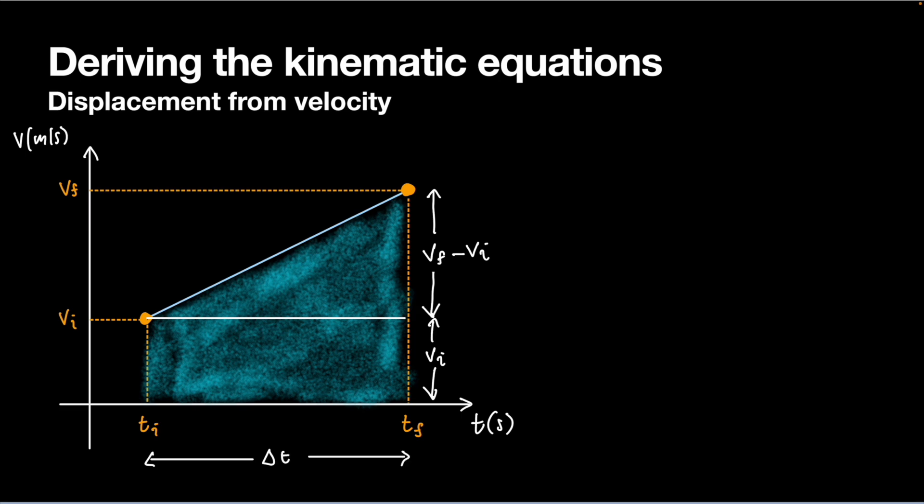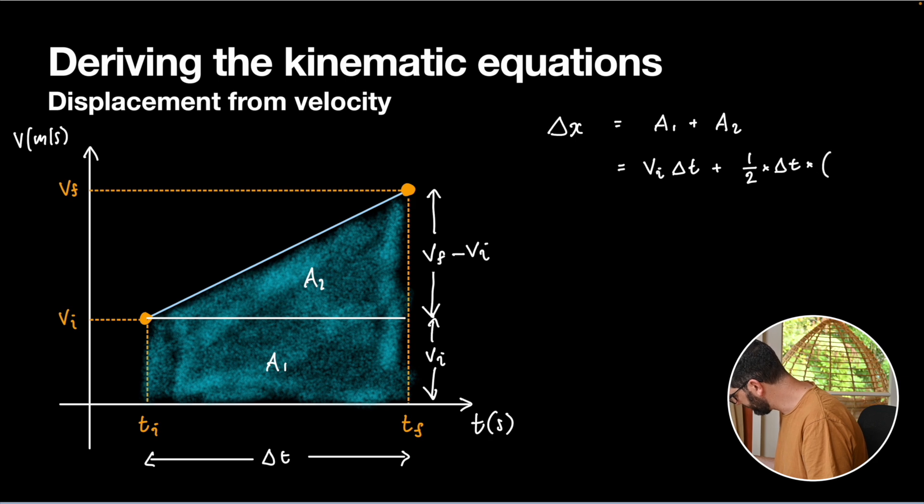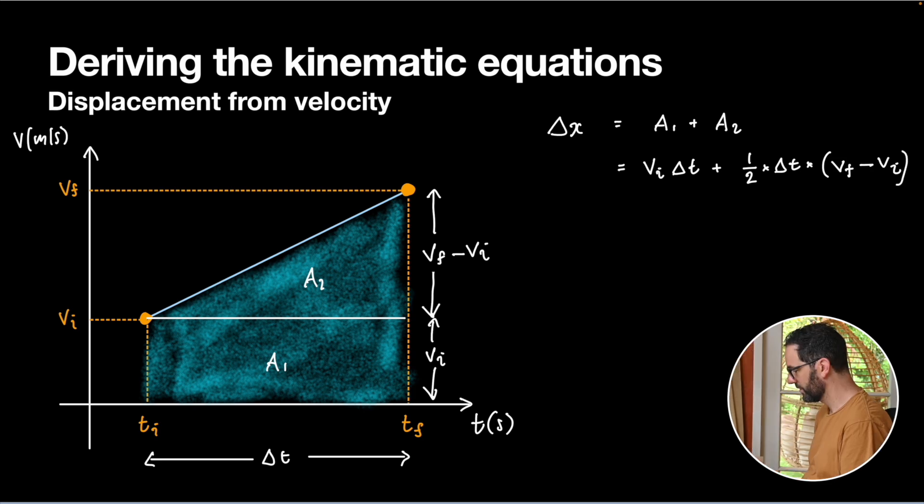So remember, our displacement over that time interval is just our signed area. So it equals, let's call the rectangle A1 and the triangle A2. So our displacement is just going to be the sum of those two areas, which will be, the rectangle has a height of vi and a base of Δt, so the rectangle area is going to be vi Δt. And the triangle area, half base times height. So half, the base is Δt, and the height is going to be vf minus vi.